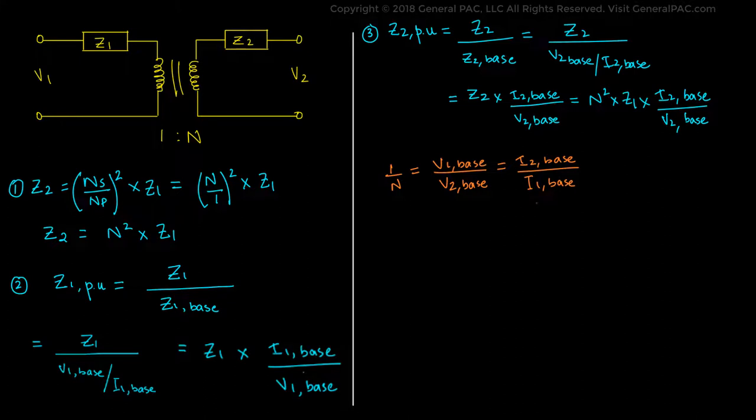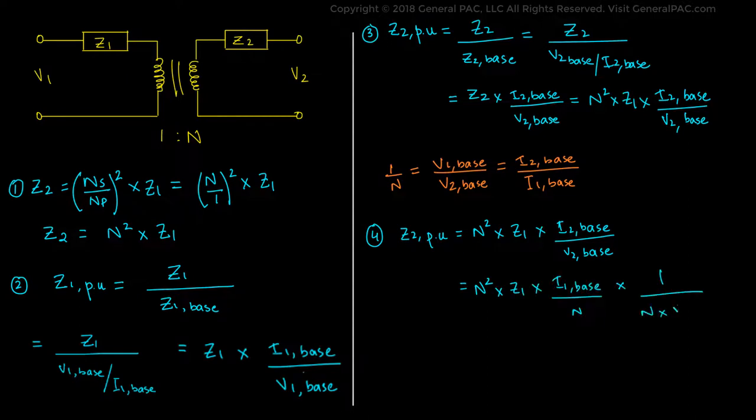See, there's an inverse there. In substituting these values in the equations of Z2 per unit, we get Z2 per unit equals N squared times Z1 times I2,base over V2,base, which equals N squared times Z1 times I1,base over N times 1 over N times V1,base. And we simplify this to get simply Z2 per unit equals Z1 times I1,base over V1,base.